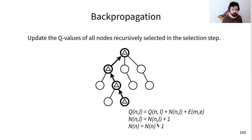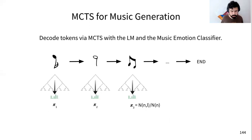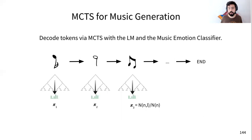After running MCTS for a certain number of iterations, to pick the next note we sample from the distribution of visit counts, which provides a better approximation of the policy — steering the language model toward the given target emotion.